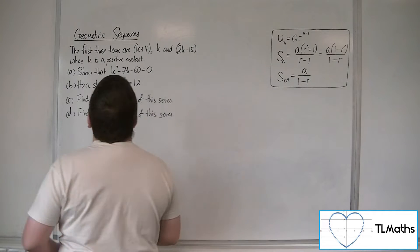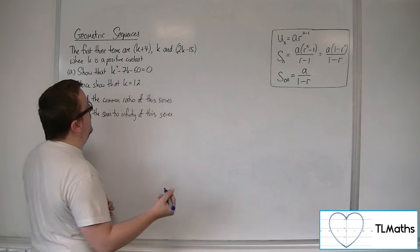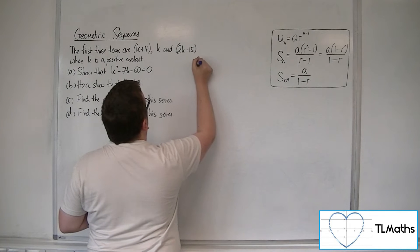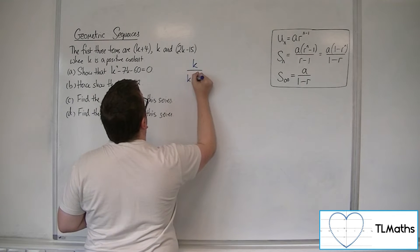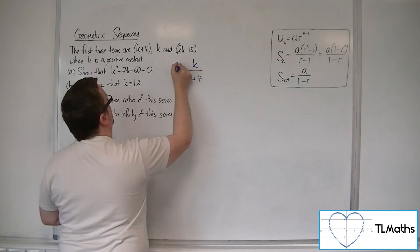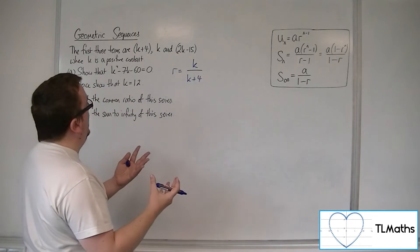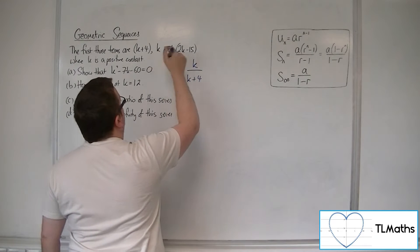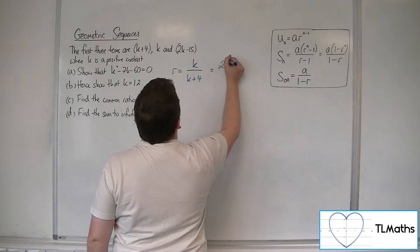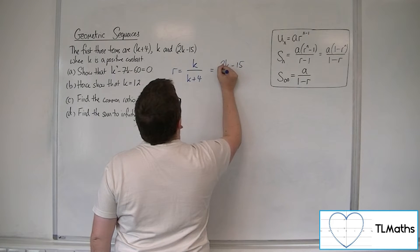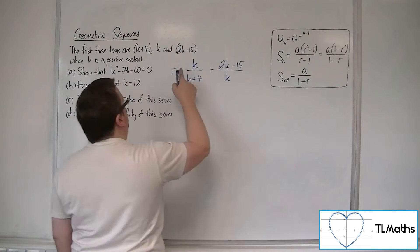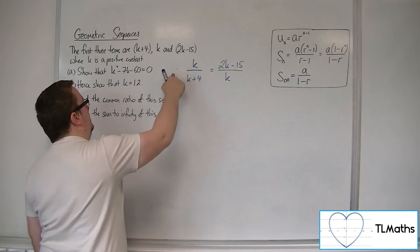So we could say that the common ratio r is equal to k over k plus 4. But that is also the same as 2k minus 15 divided by k, because the common ratio must be the same, hence the word common.